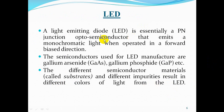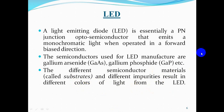A light emitting diode (LED) is essentially a P-N junction opto-semiconductor that emits monochromatic light when operated in a forward biased direction. The semiconductors used for LED manufacture are gallium arsenide, gallium phosphide, etc. The different semiconductor materials, also called substrates, and different impurities result in different colors of light from the LED.